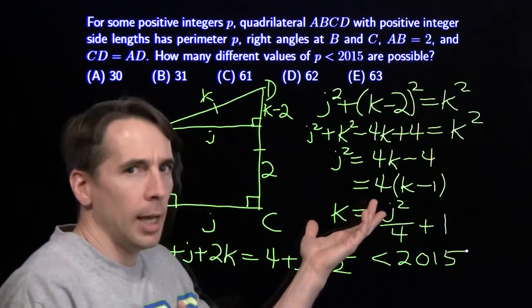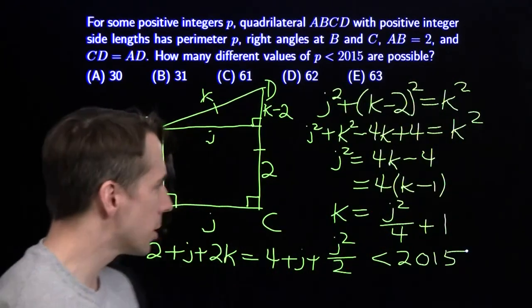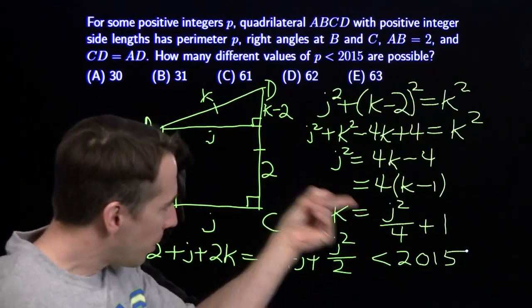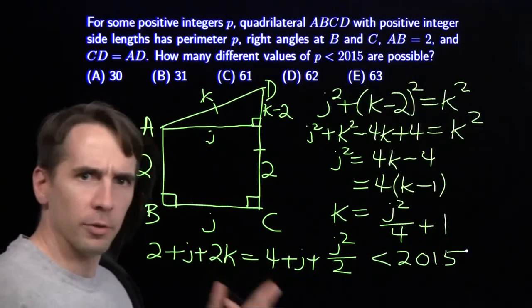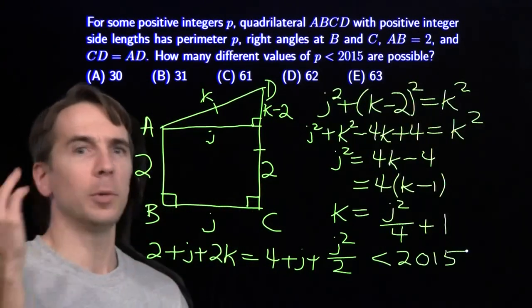Now again, J can be any positive even integer and both J and K will pop out as integers. So our problem now is just simply counting the number of positive even integers that make this inequality true. Clearly, starting from the lowest, 2 is going to work. 4 is going to work. 6 is going to work. Let me just keep going up.